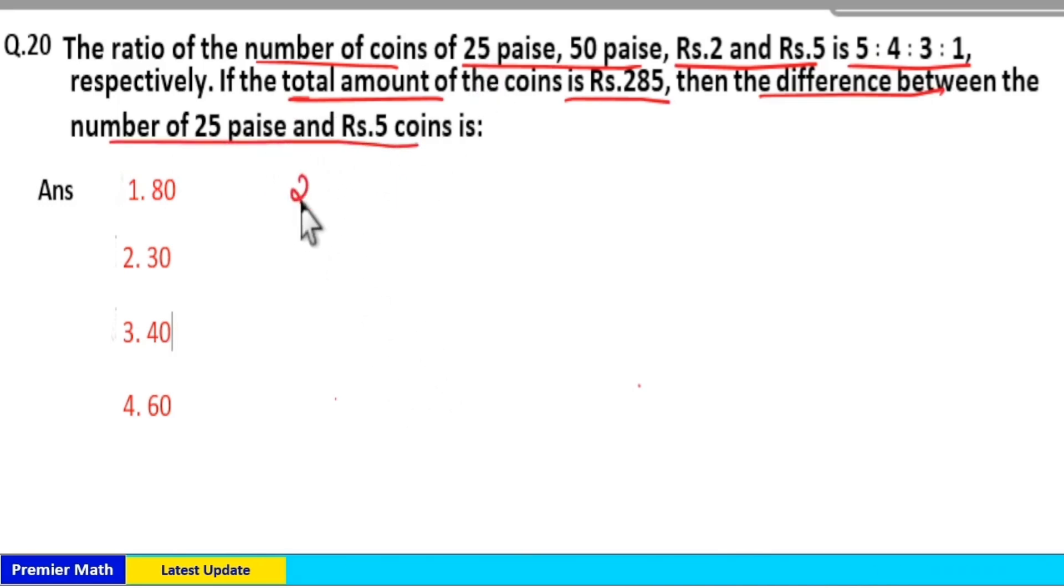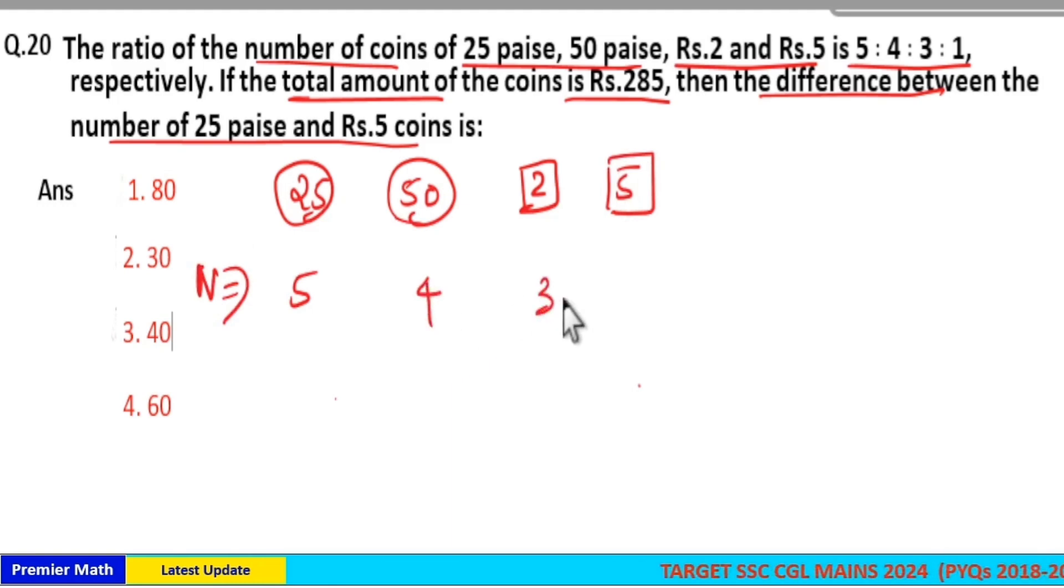Here we have 25 paise, 50 paise, rupees 2 and rupees 5 coins. Now the number of these coins are in the ratio 5:4:3:1. I will take it as 5 part, 4 part, 3 part, 1 part. We don't know the exact numbers.